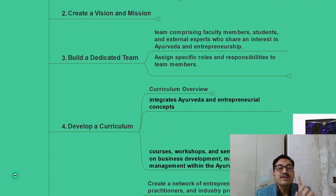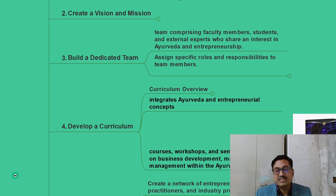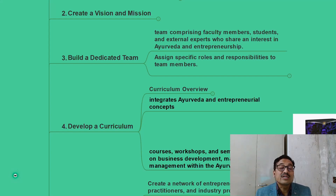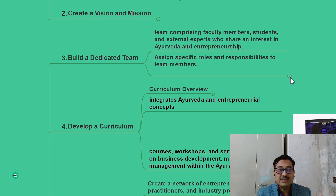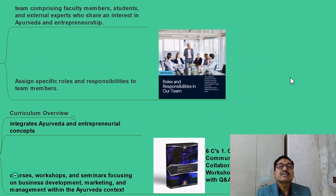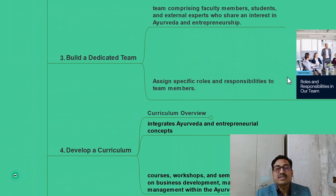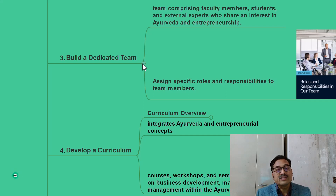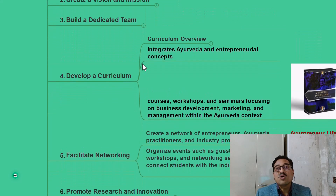The third step is to build a dedicated team, because alone you cannot develop an entrepreneurial development cell. It requires teamwork: a team with the same goal, working together, will achieve high performance and reach success sooner. Recruit people who share the same interest in Ayurveda and entrepreneurship. Assign specific roles and responsibilities to team members — that is very important. If the team does not know its roles and responsibilities, it cannot excel. Assigning specific roles increases productivity and the speed toward your entrepreneurial goal.